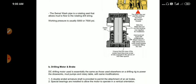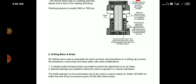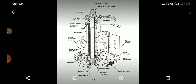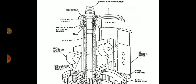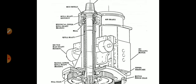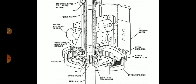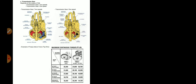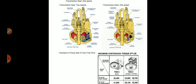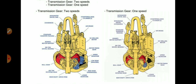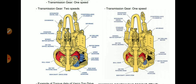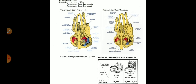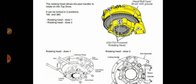The wash pipe is a rotating seal that allows mud to flow into the rotating drill string. The mud enters at the top through the drilling motor. DC drilling motors are mostly used. Components visible in the assembly include the air brake, DC drilling motor, upper gear case, motor pinion gear, and lower gear case. The transmission can be two-speed or one-speed gears.